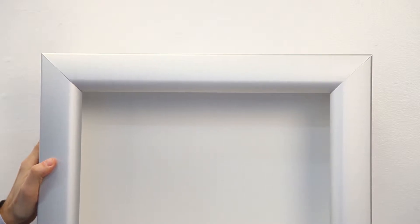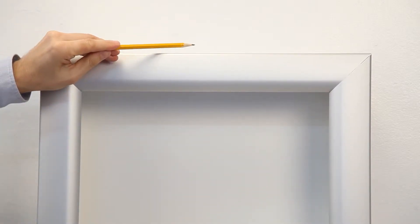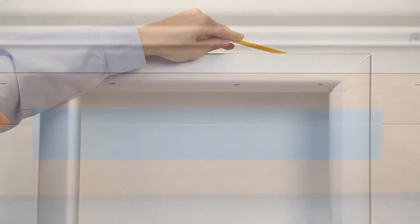When you receive a custom-built swing frame shadow box, place it against the wall where you would like it mounted. Use a pencil or add wall tape to mark the top edge of the shadow box.